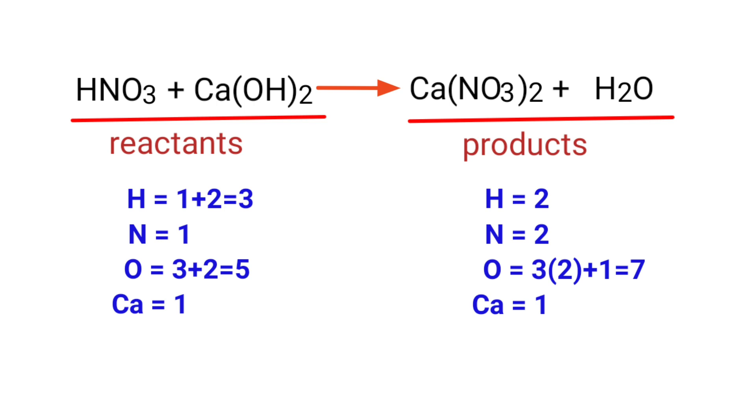The number of atoms are not balanced on both sides. To balance the chemical equation we need to make use of coefficients. A coefficient is a number that we place in front of a chemical formula.